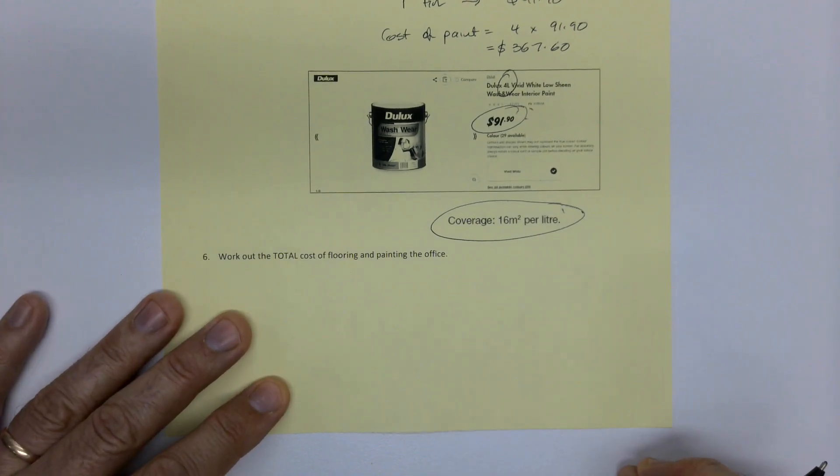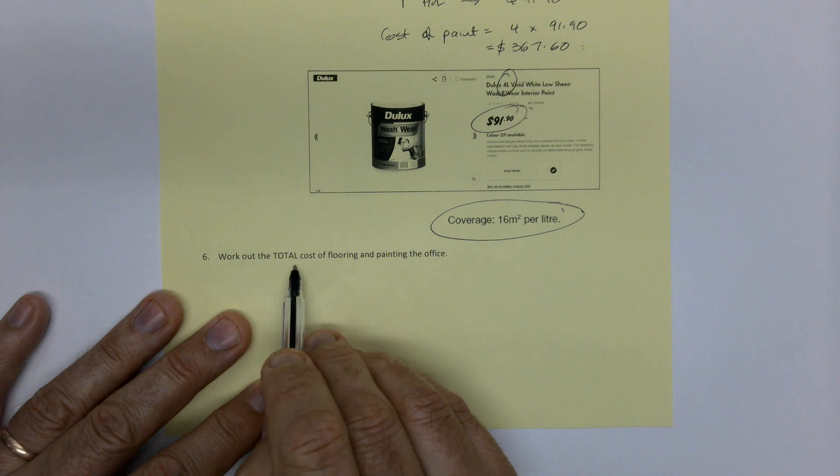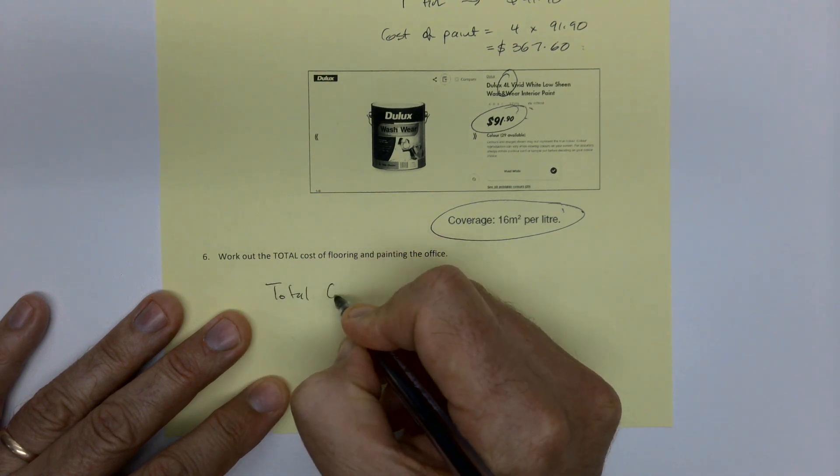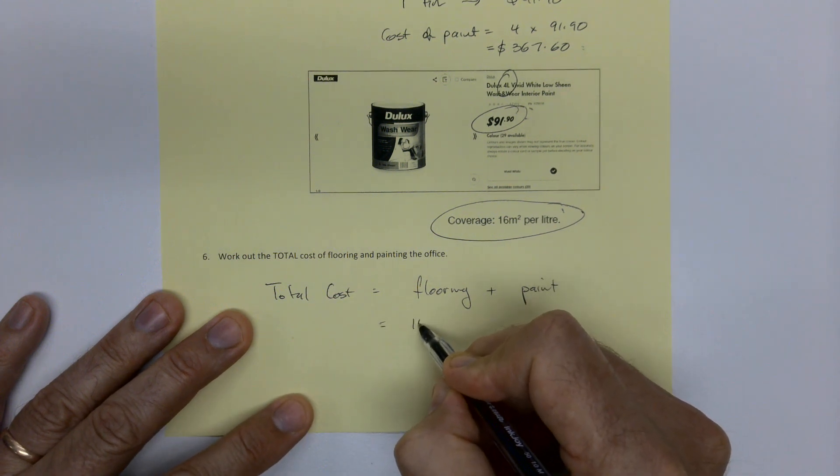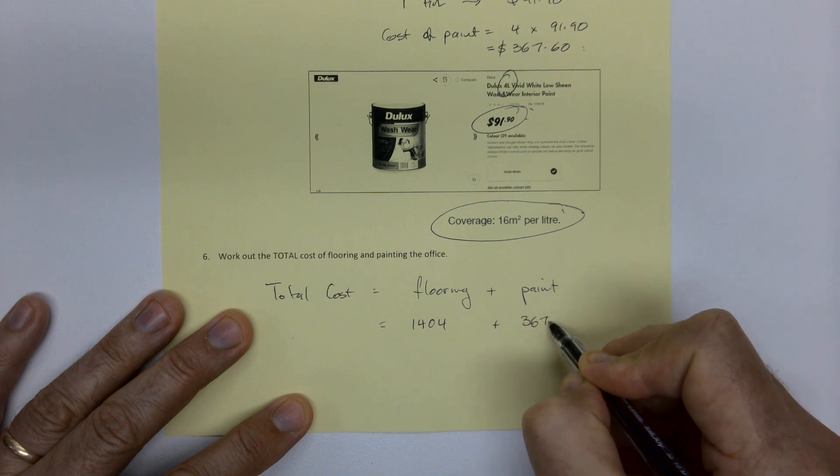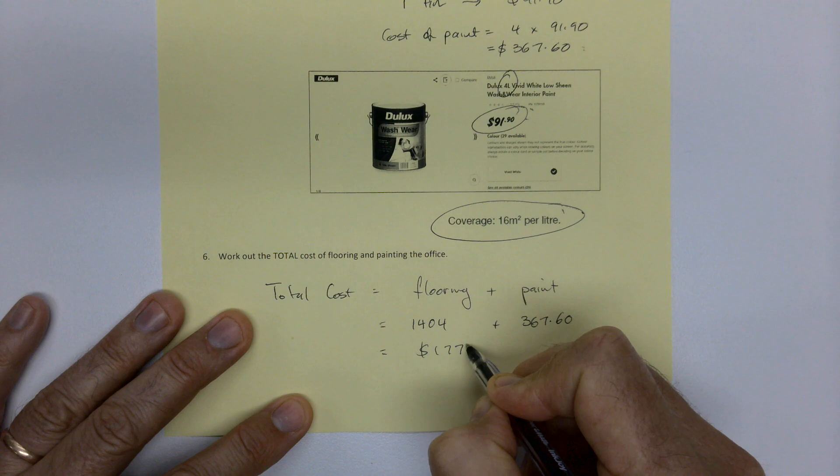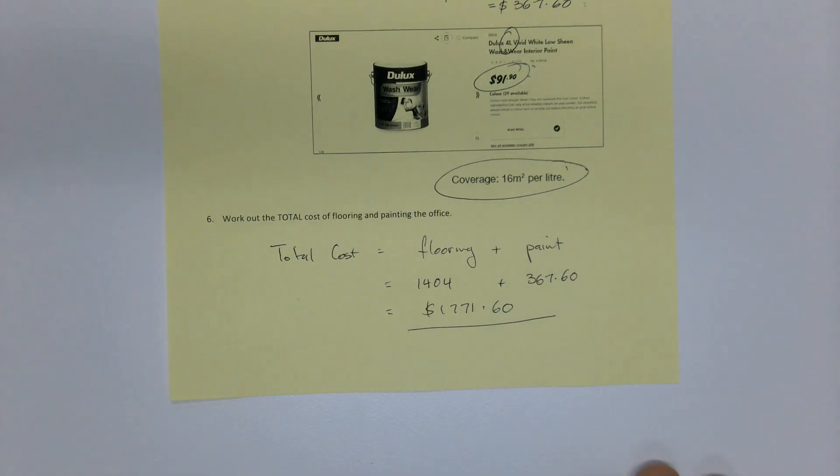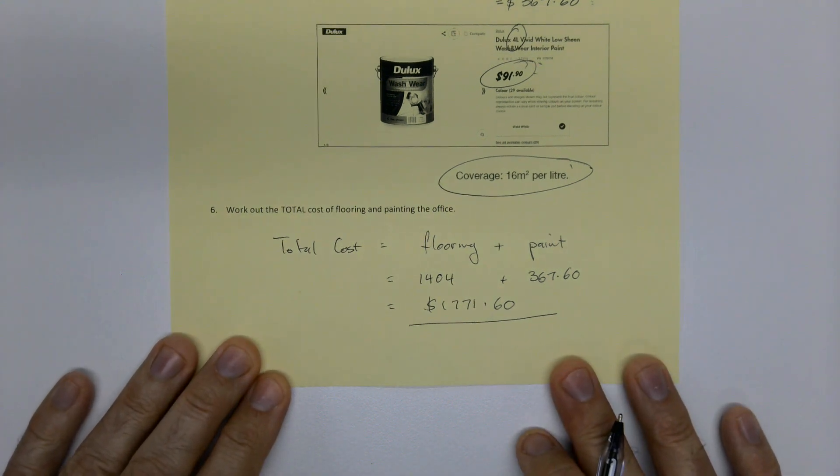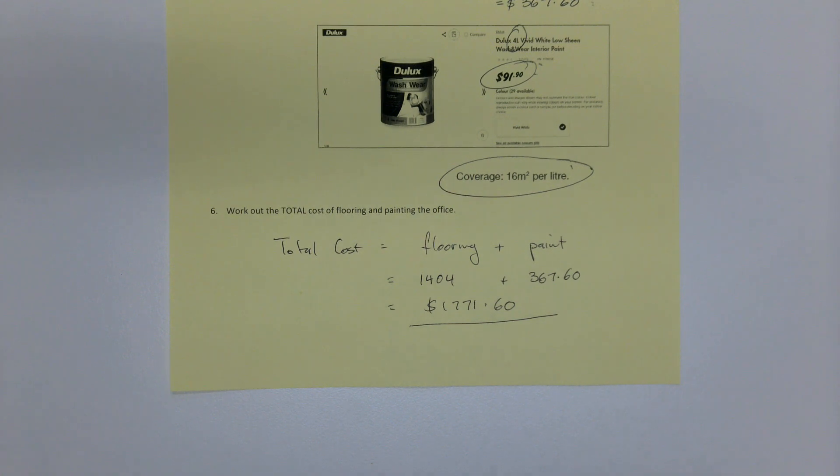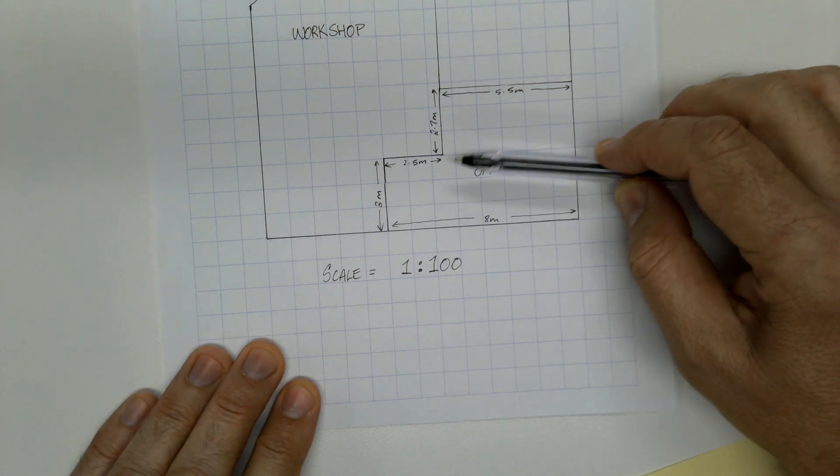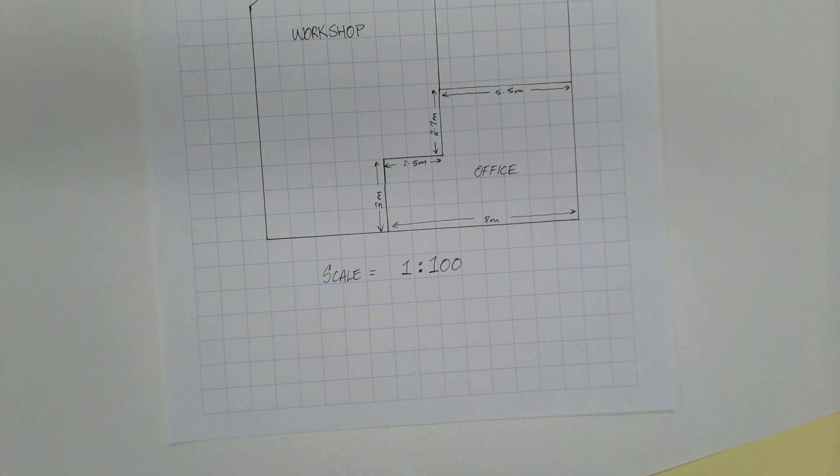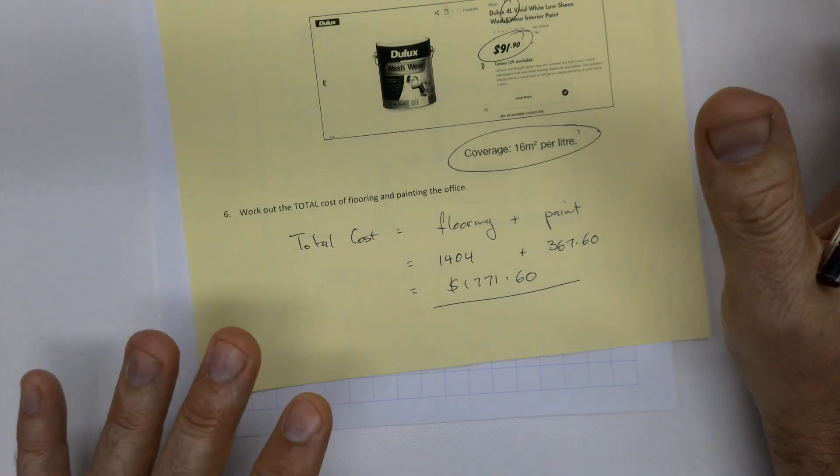So we've got the cost of the flooring, which was $1,404. And then the cost of the paint, which is that one. So work out the total cost of flooring and painting the office. The total cost equals the flooring plus the paint. That's $1,404 plus $367.60, which is $1,771.60. That is what you're after. So without labor or anything like that, just the cost of materials, it'll cost $1,771 to paint that and to floor it. To basically redo this office with flooring, new flooring and fresh paint on the walls and ceiling, $1,771.